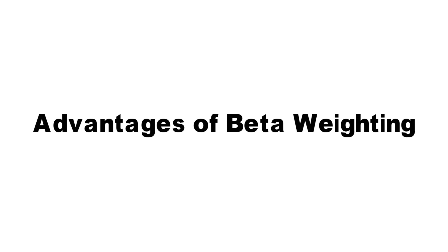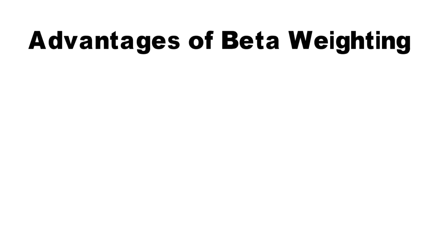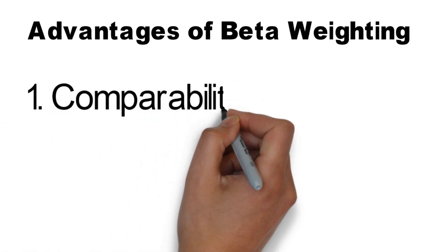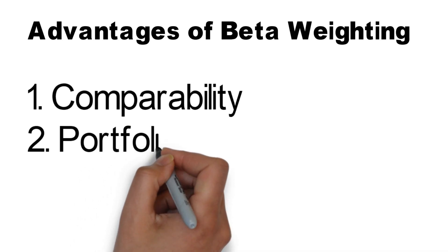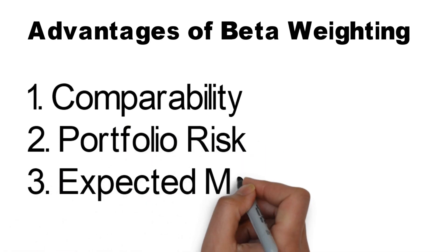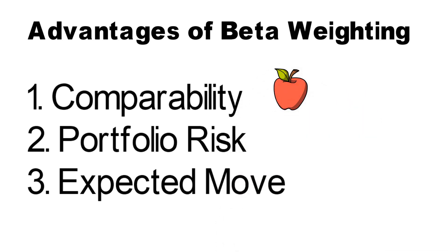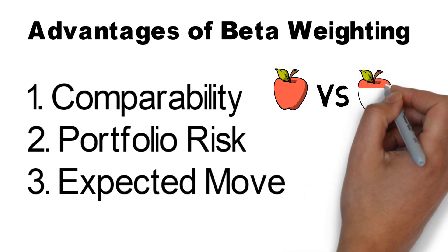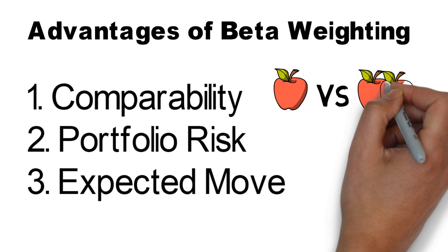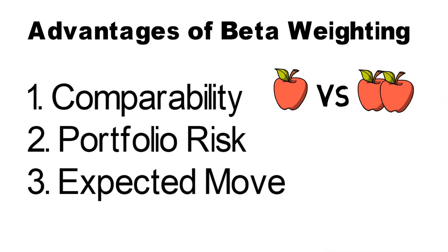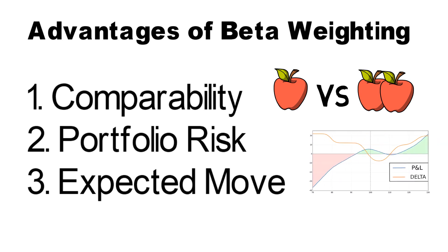Let's now quickly sum up why beta weighting is so helpful. First of all, beta weighting adds comparability — it normalizes all of your positions' deltas to one unit, allowing you to do a true apples-to-apples comparison. Without beta weighting your deltas, you can't reliably compare the directional exposure of different positions. In addition, beta weighting allows you to create a payoff profile for your entire portfolio, which is a great way to evaluate and manage your directional risk. Last but not least, beta weighting allows you to estimate the expected daily price fluctuations of your overall portfolio.